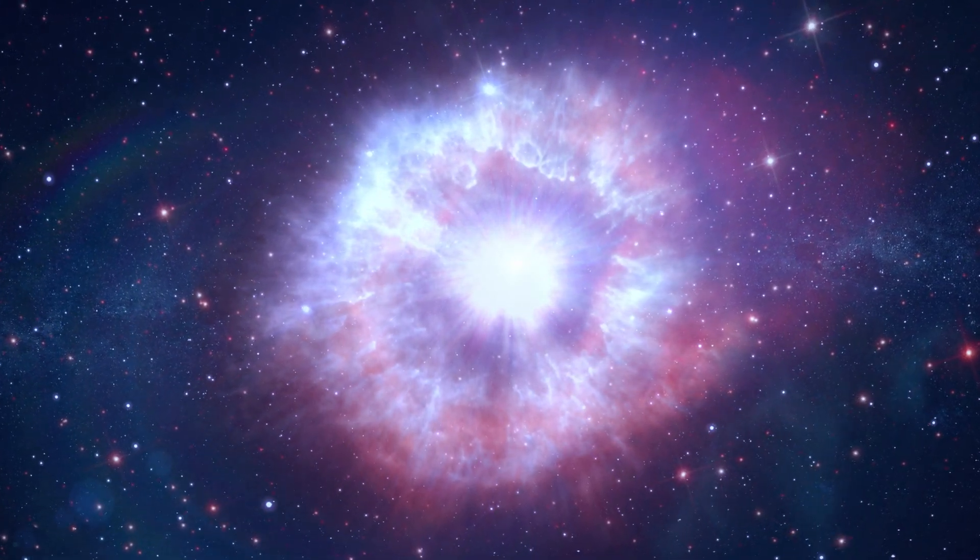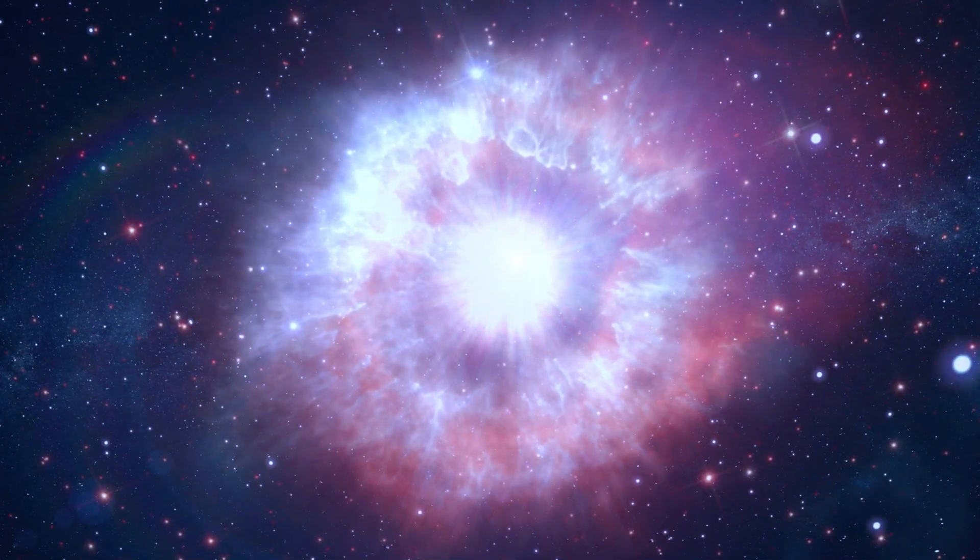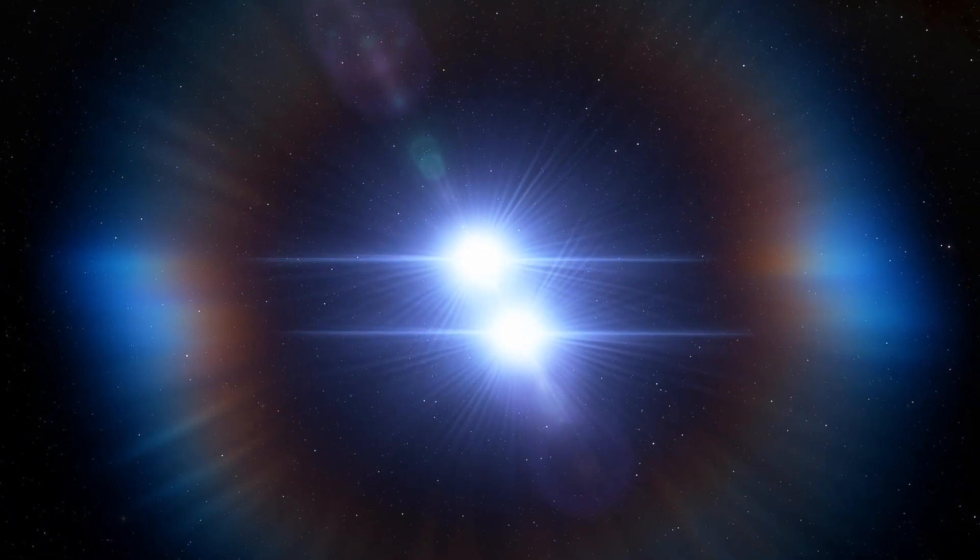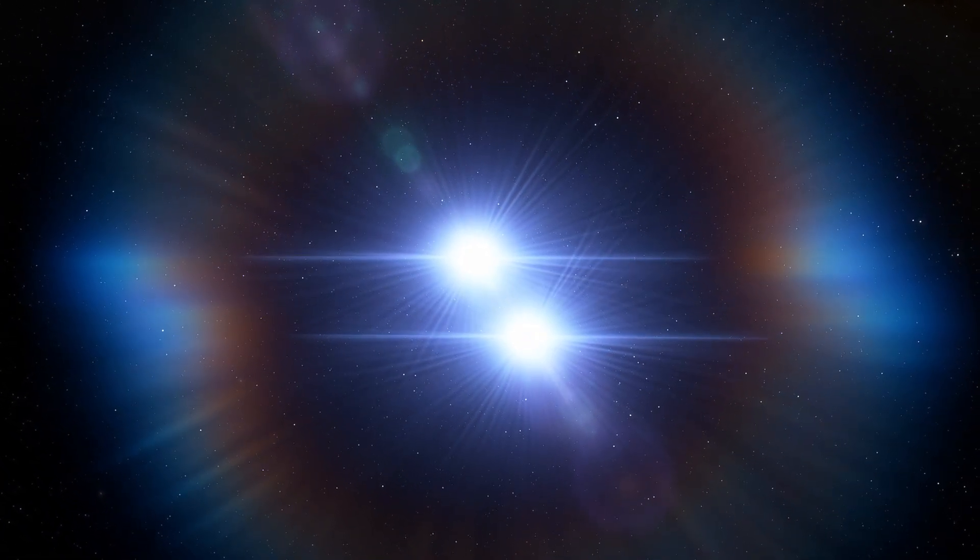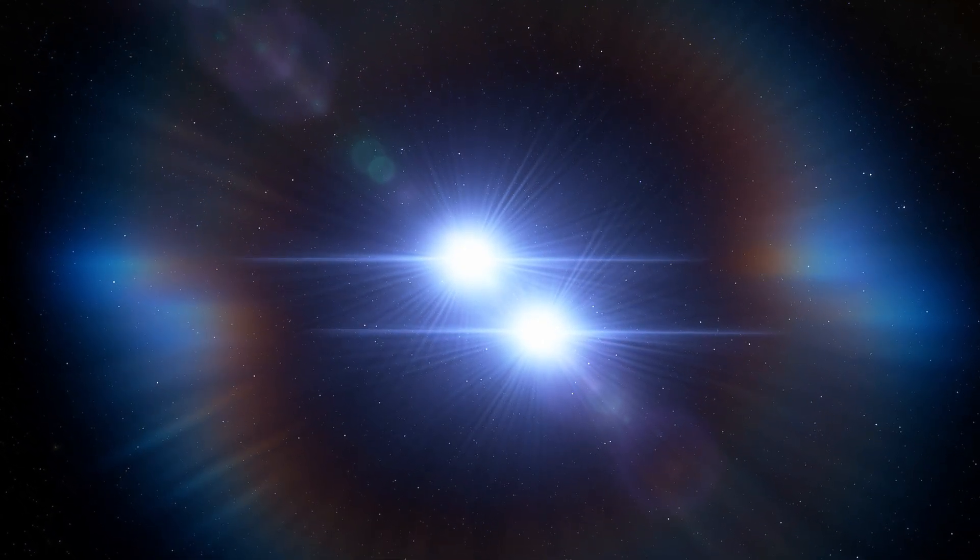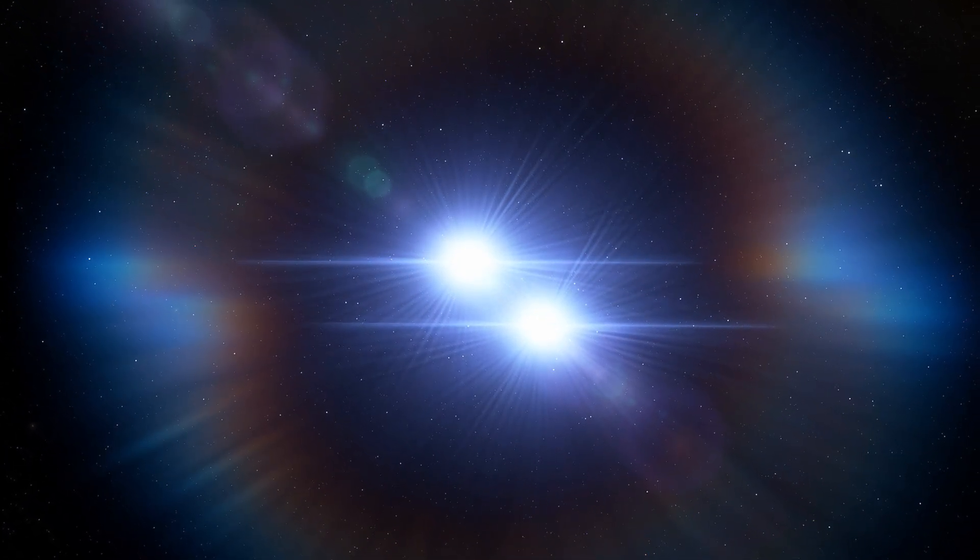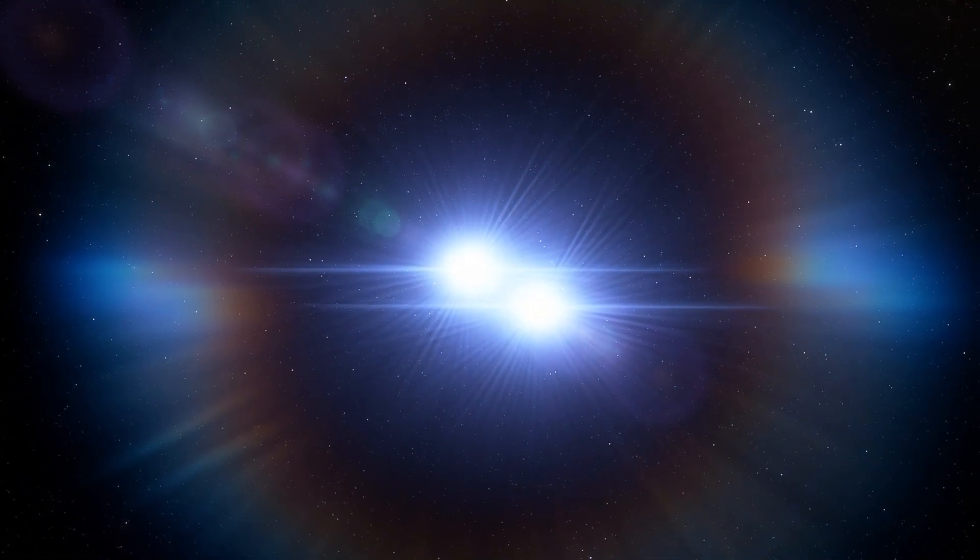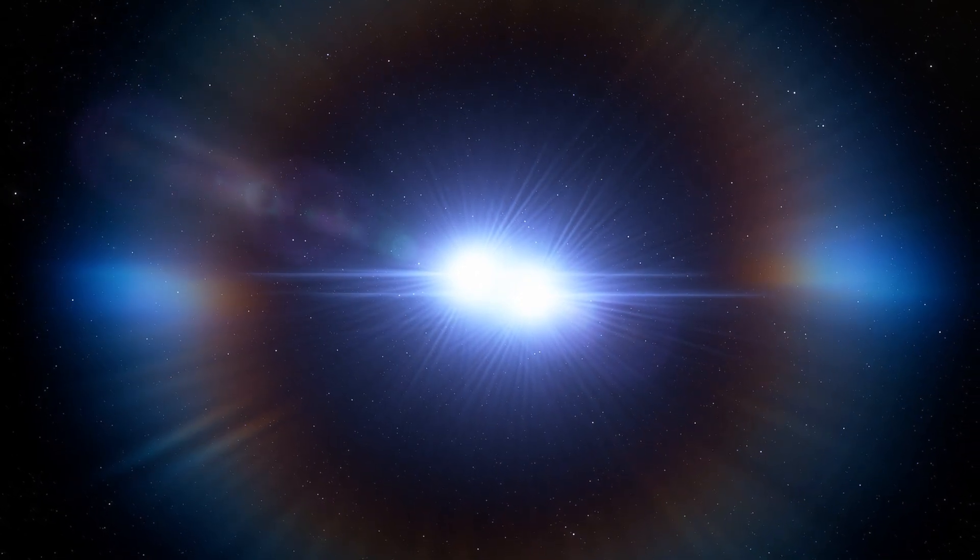WR140 is one of the few dusty Wolf-Rayet stars found in a binary system. It's in orbit with another star, which is itself a massive blue supergiant with a ferocious wind of its own. Only a handful of systems like WR140 are known in our whole galaxy, yet these select few deliver the most unexpected and beautiful gift to astronomers.